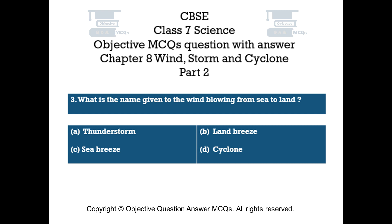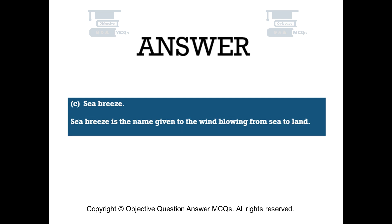Question number 3. What is the name given to the wind blowing from sea to land? Option A: thunderstorm. Option B: land breeze. Option C: sea breeze. Option D: cyclone. The right answer is Option C: sea breeze. Sea breeze is the name given to the wind blowing from sea to land.